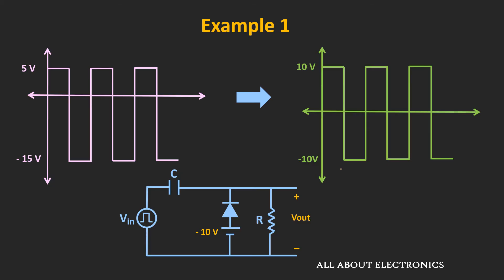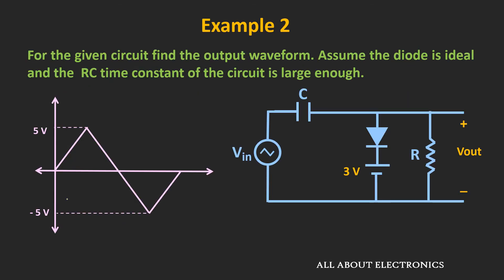Now let's move to the next example. In this example, the input waveform is a triangular waveform and it is given to this clamper circuit. We have been asked to find the output waveform. Once again, it has been assumed that the diode is an ideal diode and the RC time constant of the circuit is very large. So we will use the shortcut method to find the output waveform.